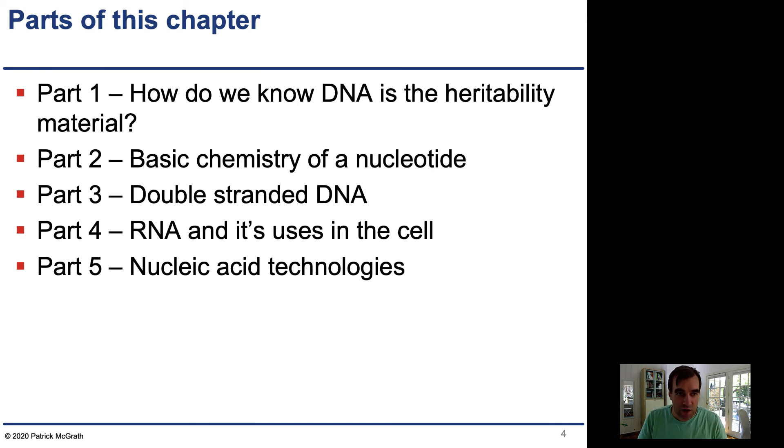The five parts of this chapter: First, how do we know DNA is the heritability material—that DNA encodes a gene and an allele? Second, understand the basic chemistry of a nucleotide in great detail. Third, double-stranded DNA—how nucleotides polymerize and come together to form double-stranded DNA. Part four will be on RNA and its uses in the cell, and part five on nucleic acid technologies.